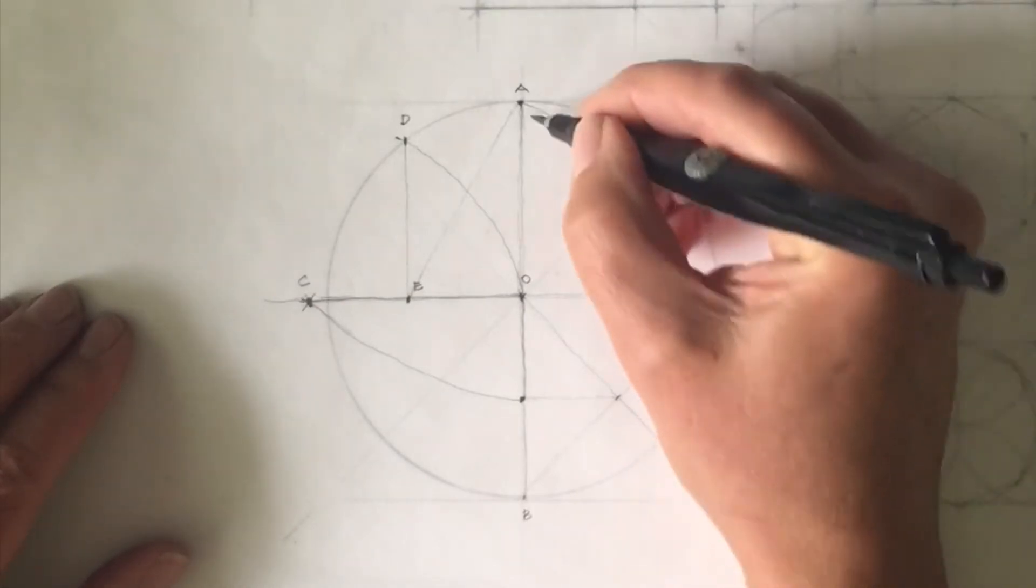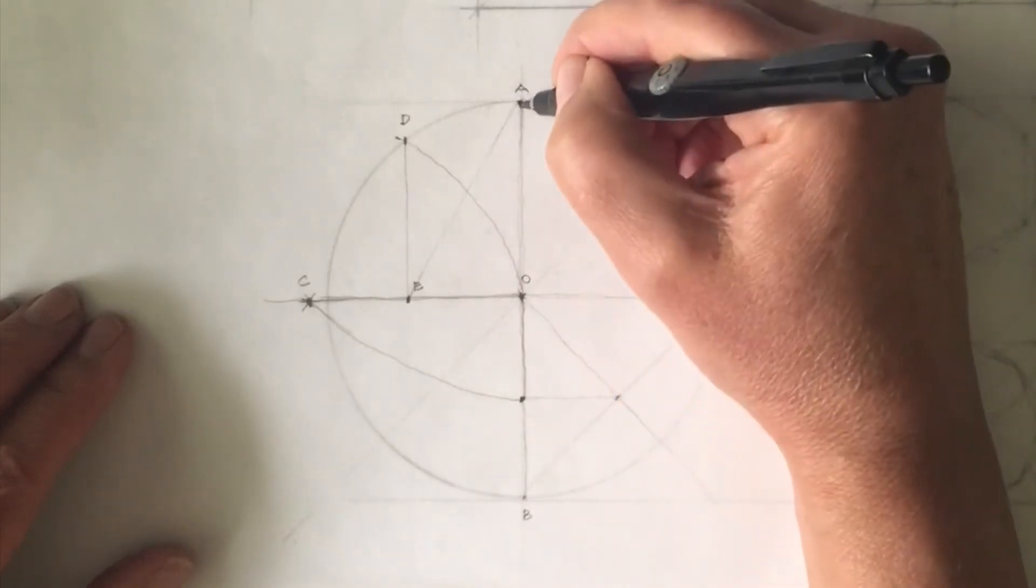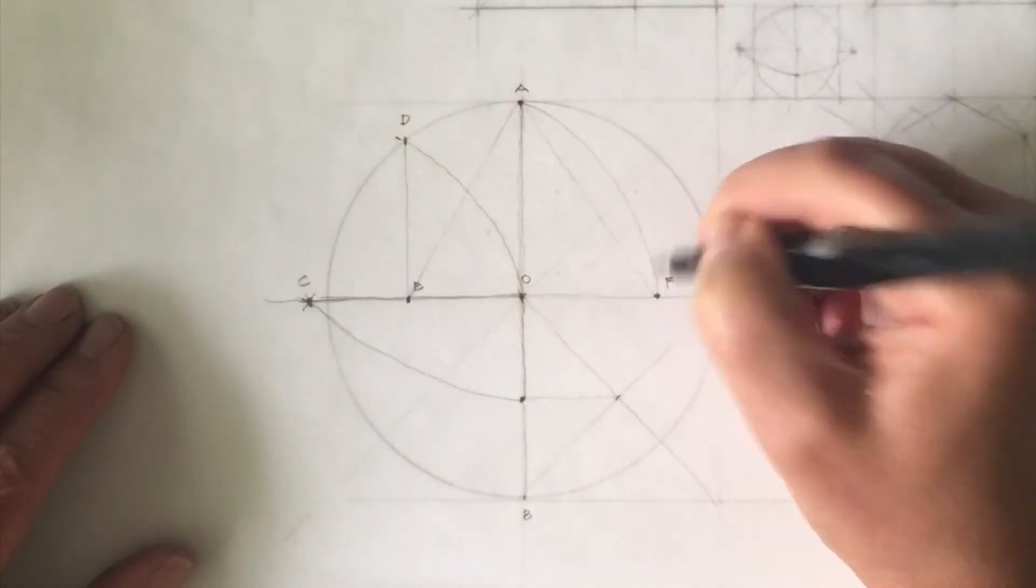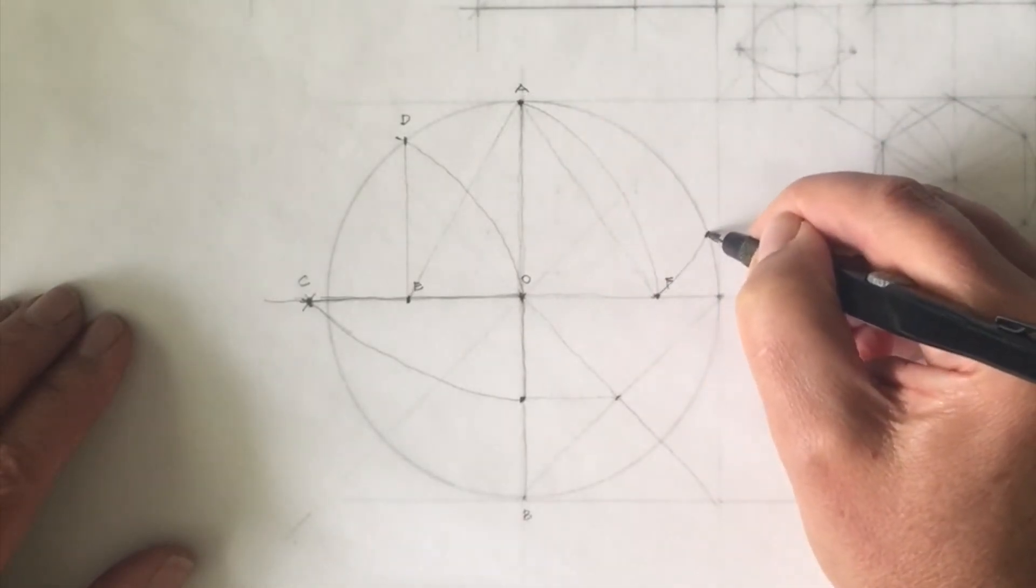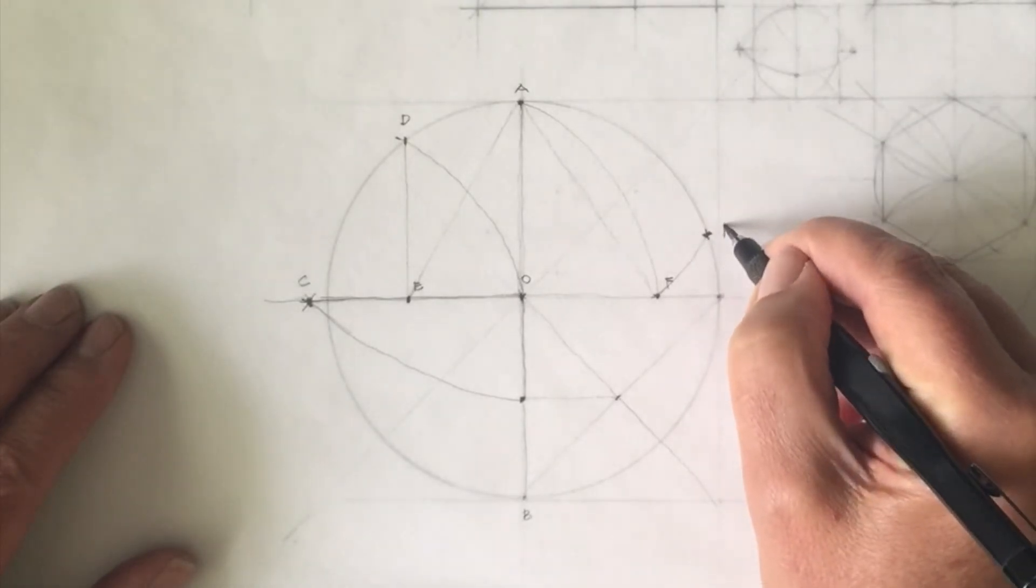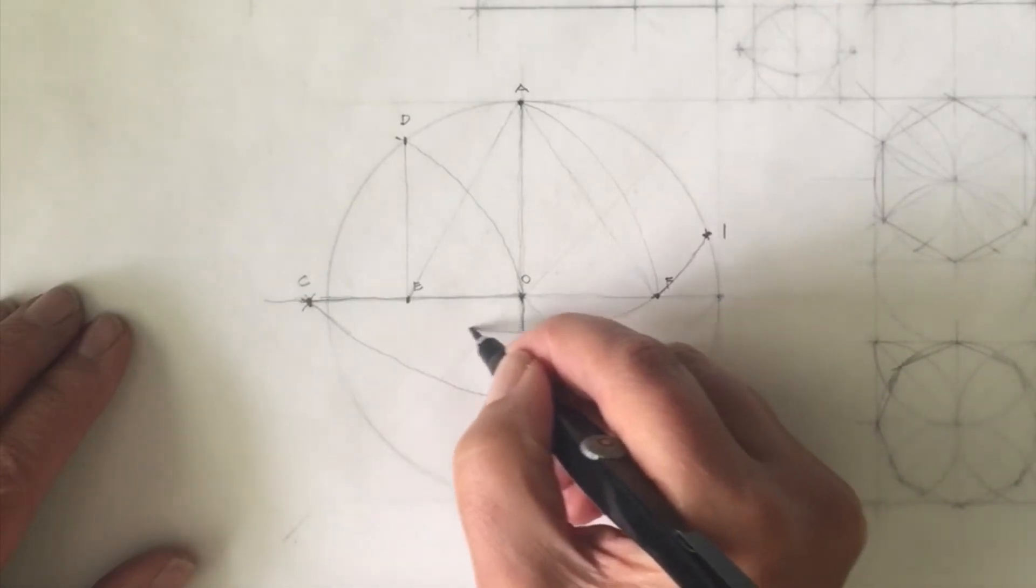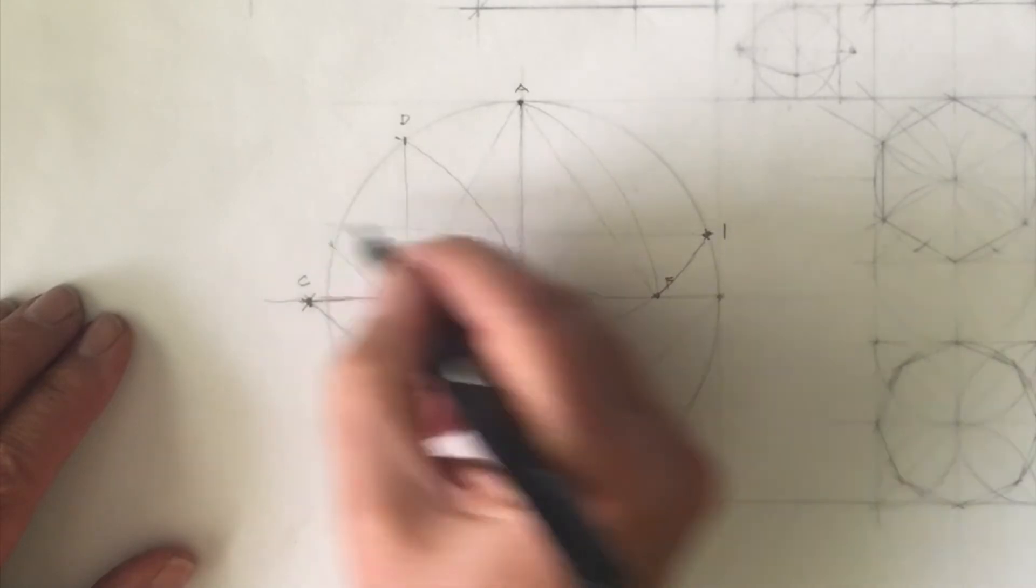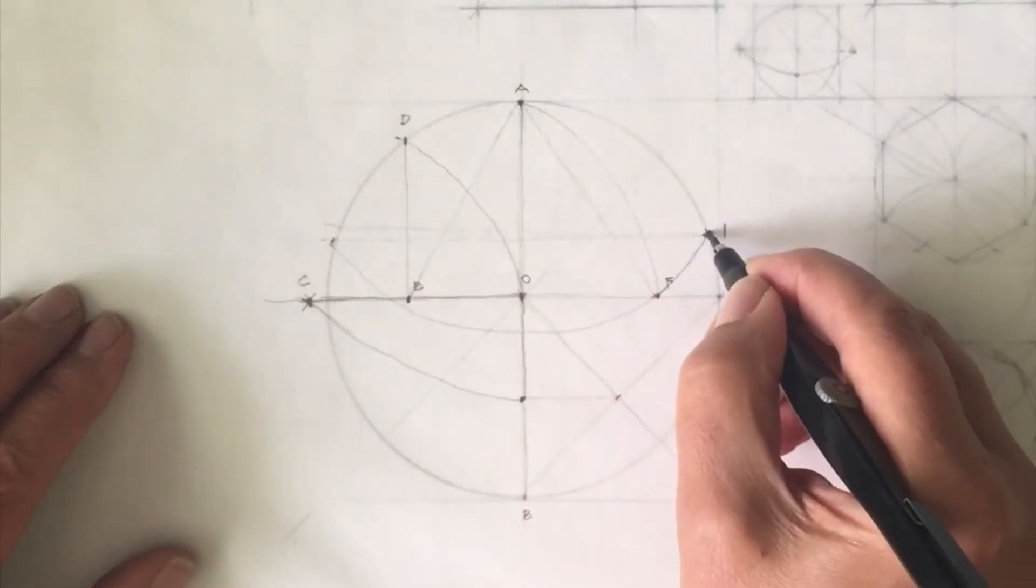Alright, so F is important. I'm going to put my compass point back on this point A here. I'll stretch out my compass to here and I'm going to swing it, my compass upward and lo and behold, finally I get my first point on the pentagram and that arc will carry it down all the way through there.